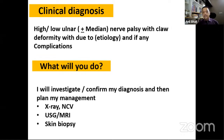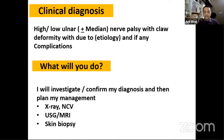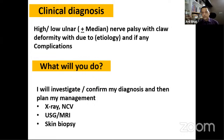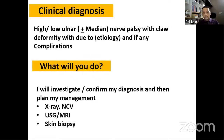Investigations may include X-ray of the elbow for condylar fractures, nerve conduction studies, ultrasound of the Guyon's canal or cubital tunnel, and MRI if a schwannoma or tumor is suspected. For Hansen's disease, skin biopsy is very important.